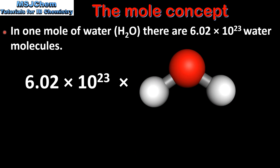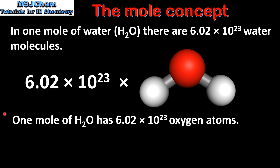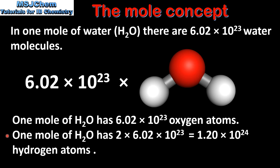In one mole of water, which is H₂O, there are 6.02 times 10 to the power of 23 water molecules. A water molecule consists of two atoms of hydrogen and one atom of oxygen. Therefore, one mole of water has 6.02 times 10 to the power of 23 oxygen atoms. To find the number of hydrogen atoms in one mole of water, we multiply the Avogadro constant by 2, because a molecule of water consists of two hydrogen atoms. This gives us 1.20 times 10 to the power of 24 hydrogen atoms in one mole of water.